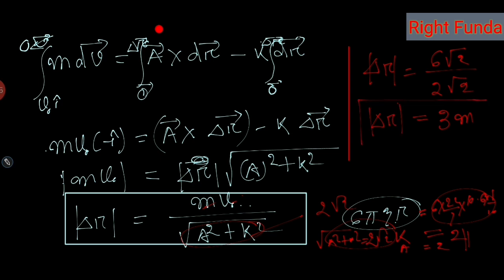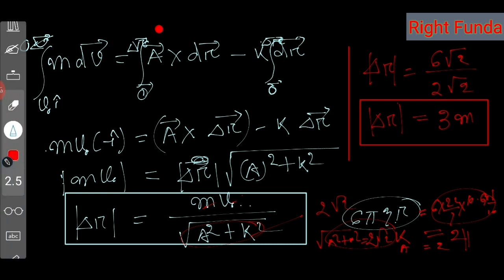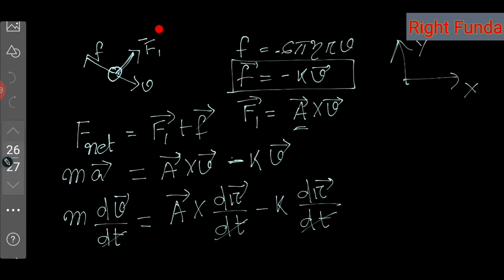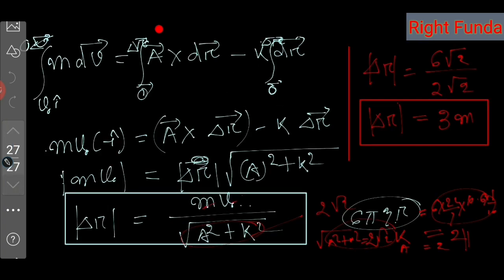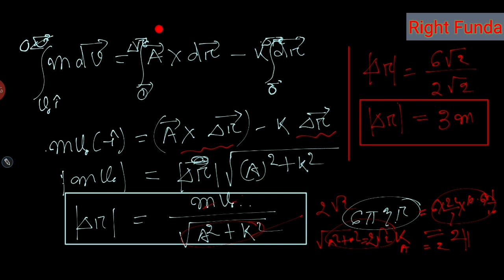The magnitude of the displacement of the ball moving in viscous fluid with the force A⃗ × V⃗ acting is 3 meters. To recap the strategy: we wrote all forces vectorically, recognised V⃗ = dr⃗/dt so dt could be cancelled, integrated to get A⃗ × Δr⃗ and k·Δr⃗ terms, used the fact that these two vectors are perpendicular, took magnitudes, and calculated |Δr⃗| = 3 m.